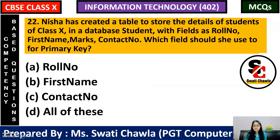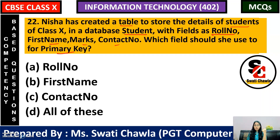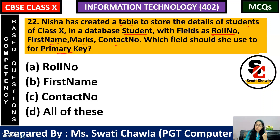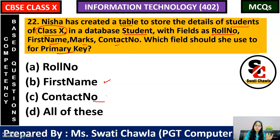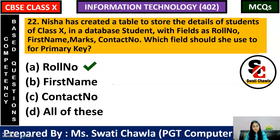Next: Nisha has created a table to store the details of students of class 10 in a database with fields: roll number, first name, marks, and contact number. Which field should she use as primary key? A primary key is the column whose values are unique for every record. Roll number is unique for every student; first name can repeat; contact number can repeat — for example, twins may have the same father's contact number. So the correct answer is option A — that is roll number.